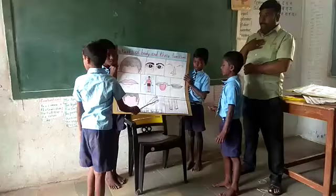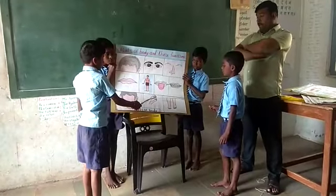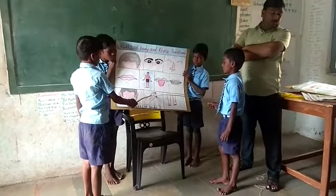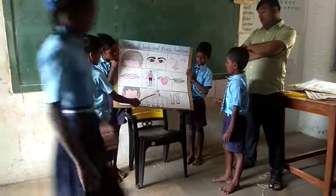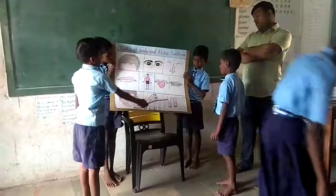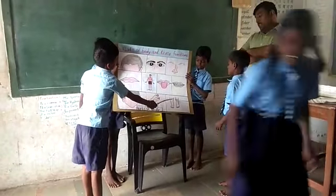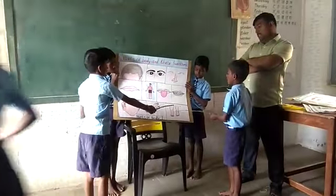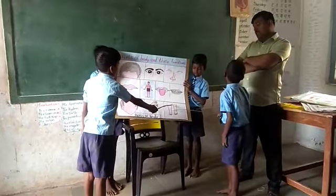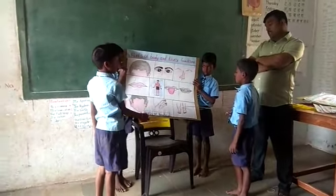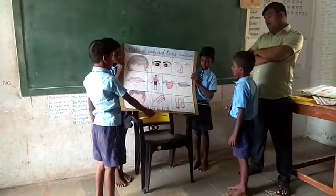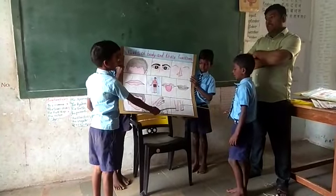What are these? These are hands. What do you do with your hands? I walk with my hands. What are these? These are legs. What do you do with your legs? I walk, I run, I jump with my legs.